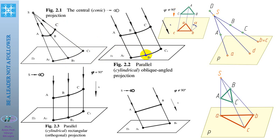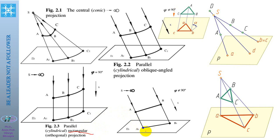If projection rays are parallel to each other, this type of projection is called parallel projection. In parallel projections, the projection center is infinitely far from the plane of projections. If the angle between the rays of projections and the plane of projections is 90 degrees — a right angle — this type of projection is called rectilinear or orthogonal projection.